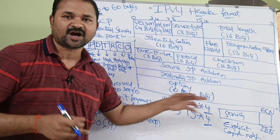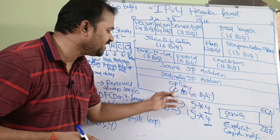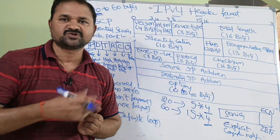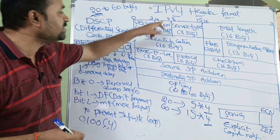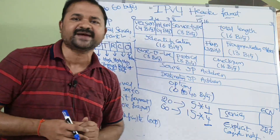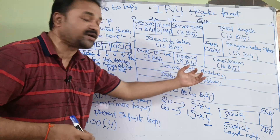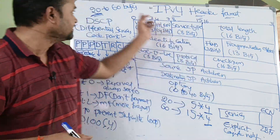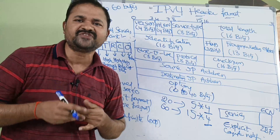With the options field, options means data. This options field size is 0 to 40 bytes. The IP header size is 20 bytes. If we add all these fields, we will get 20 bytes. If we add 40 bytes for options, then we will get 20 plus 40, that is 60 bytes. Now let us see all the fields one by one.